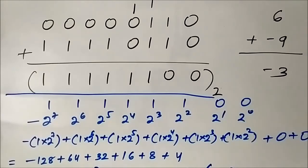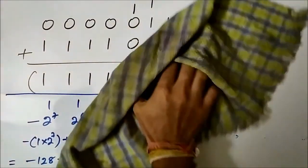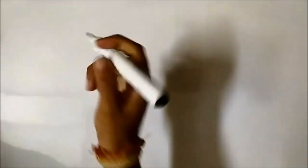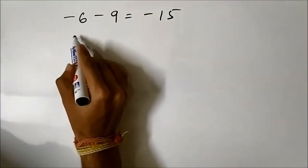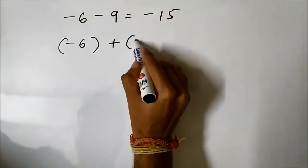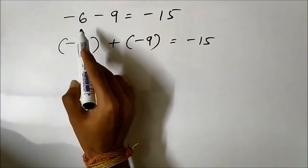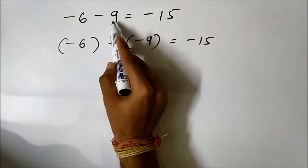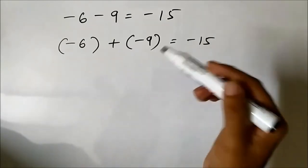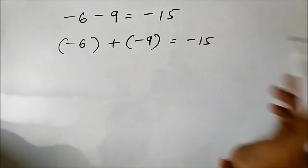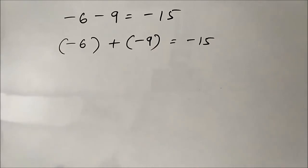We have discussed two examples of binary subtraction using 1s complement. Now I want you to try this operation yourself: minus 6 minus 9 equals minus 15, which can be written as minus 6 plus minus 9. Represent minus 6 using 1s complement, represent minus 9 using 1s complement, add the two signed binary numbers, then convert to decimal and verify the result is minus 15.